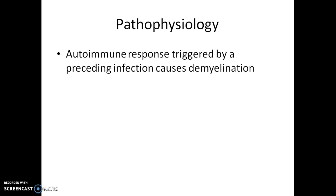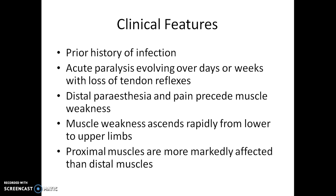Regarding pathophysiology, GBS is an autoimmune response triggered by a preceding infection, and this autoimmune response causes demyelination of axons. There will be a preceding infection — bacterial or viral — which triggers an autoimmune response. The body's immune system then attacks the body's axons, especially the myelin fibers, causing the defect in the nervous system.